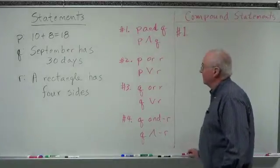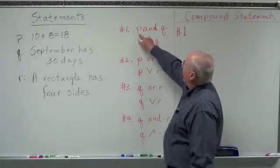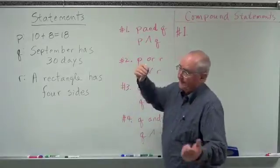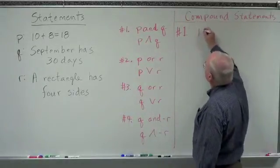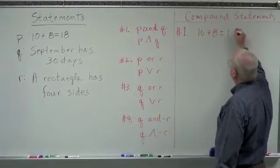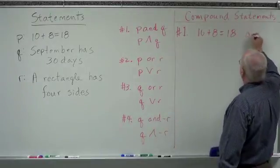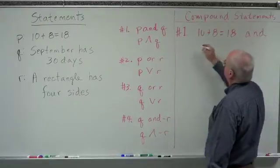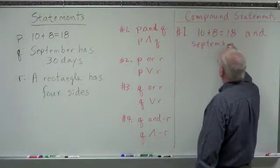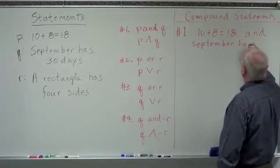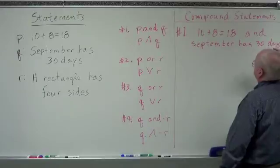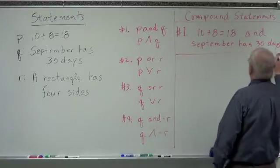So it's going to take just a little bit to do that. How do we write P and Q? Well, we write P and Q — it's pretty simple. P and Q is: 10 plus 8 equals 18, and September has 30 days. Pretty easy. There's number one.